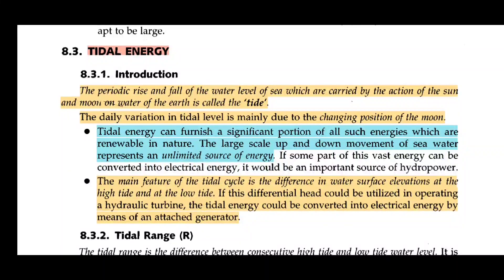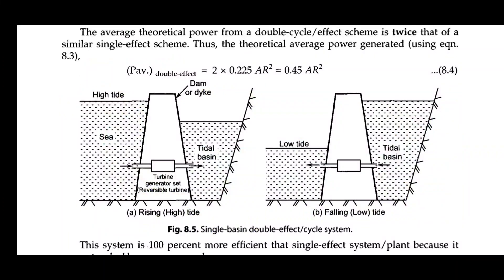The main feature of the tidal cycle is the difference in water surface elevations at high tide and low tide. We are going to talk about the difference in the water surface, the direction of high tide and low tide of the water, and how a tidal power plant works.